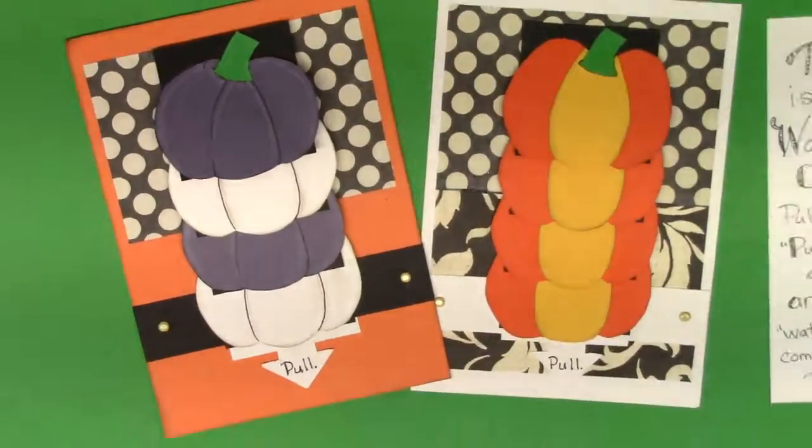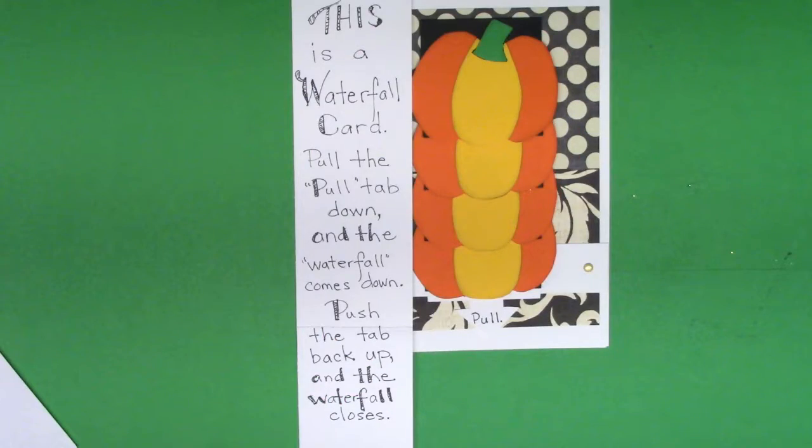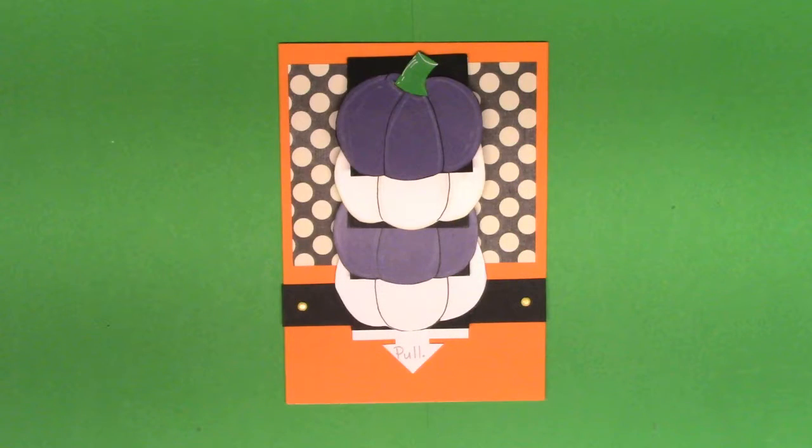So there they are side by side. Gonna do that really fast just for fun. Happy Fall Y'all. And then there is a little note that I put in mine. It says this is a waterfall card. Pull the pull tab down and the waterfall comes down. Push the tab back up and the waterfall closes, just in case someone needs to know how to work it.